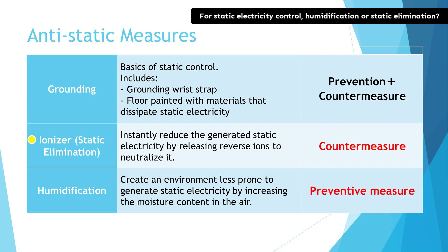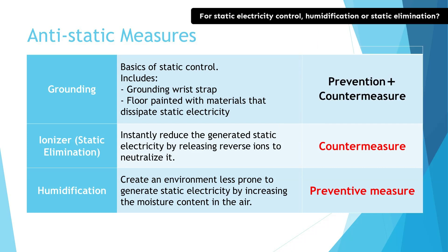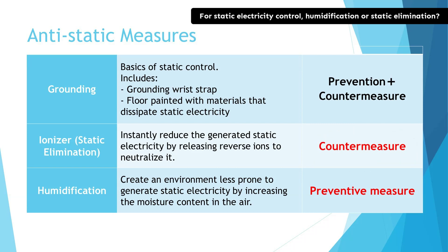The main focus from here is on ionizers, which are used for static elimination. These devices swiftly reduce the generated static electricity. The idea is to eliminate the static charge that has been generated. Static charge can be positive or negative. When something is positively charged with static electricity, ionizers use negative ions to neutralize it. This aims to remove the static charges that have already occurred, making it a form of countermeasure. The ionizer, or static eliminator, is intended to remove static electricity that is already there — as the name suggests, it eliminates static electricity.